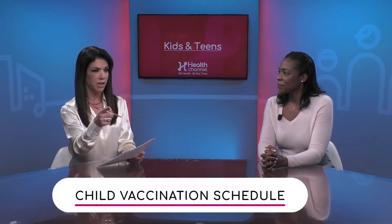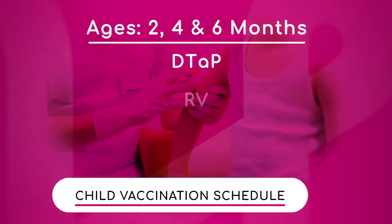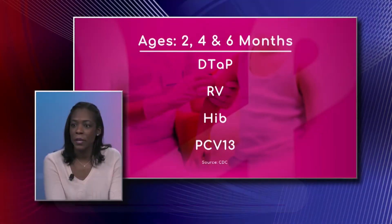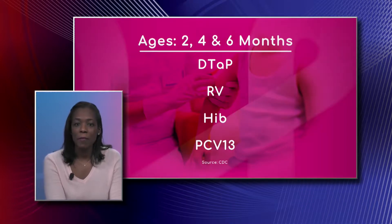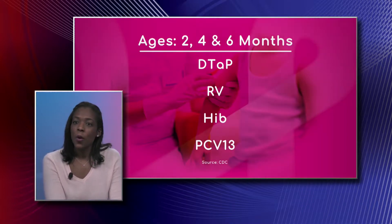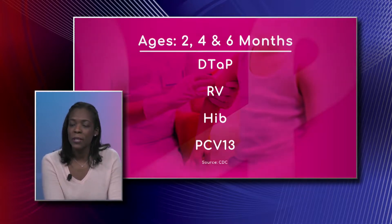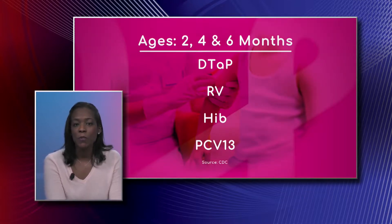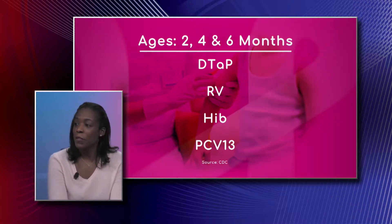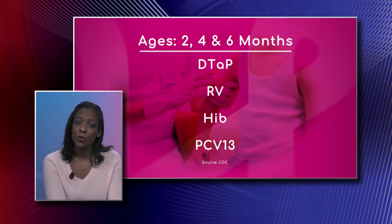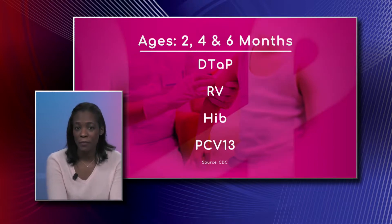Let's go over the schedule. We have a graphic of some of the vaccines, typically given at ages two months, four, and six months. What we have here is the DTaP vaccine, which is diphtheria, tetanus, and pertussis, the rotavirus vaccine, the Haemophilus influenzae B, and the Prevnar, which is a pneumococcal vaccine. All of those vaccines are given at age two because that's when all of the maternal antibodies will leave the infant's system, and the infant's own antibodies can now be created to combat infection.